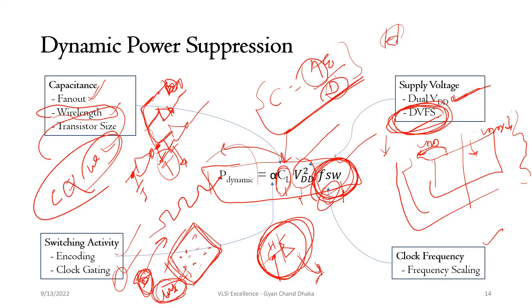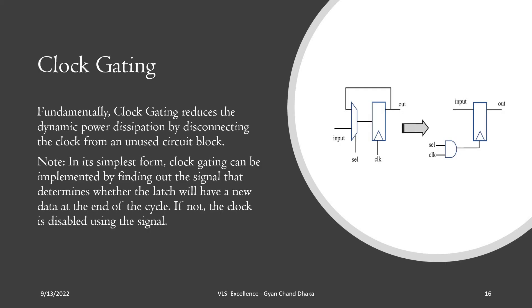Using clock gating, we can minimize the activity factor. Consider the original flip-flop circuit: the clock goes directly to the flip-flop and there is a selection line. When the selection line is high, new input data propagates to the output; otherwise, the previous data recirculates. However, at every clock cycle, every internal node of the flip-flop is switching — because the clock has not been gated.